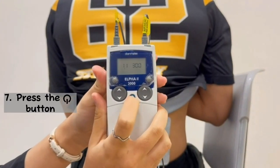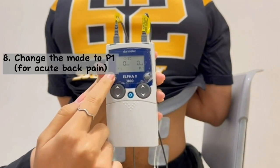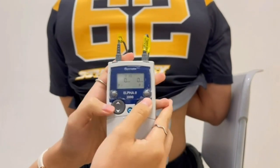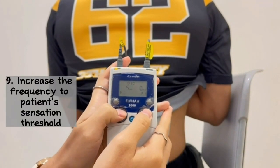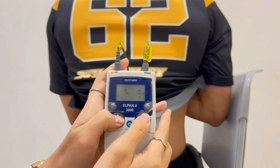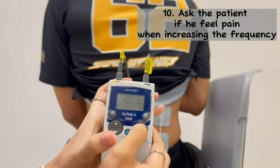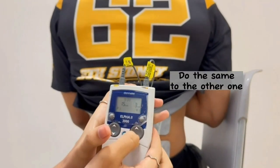After that, press the ON button. Then, change the mode to P1. Next, the therapist increases the frequency to patient's sensation threshold. The therapist asks the patient if he feels pain when increasing the frequency. Do the same to the other one.